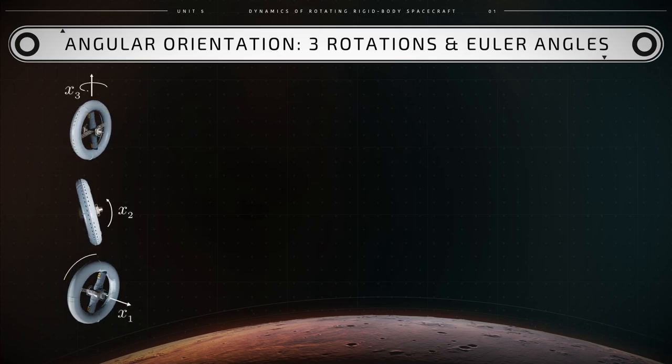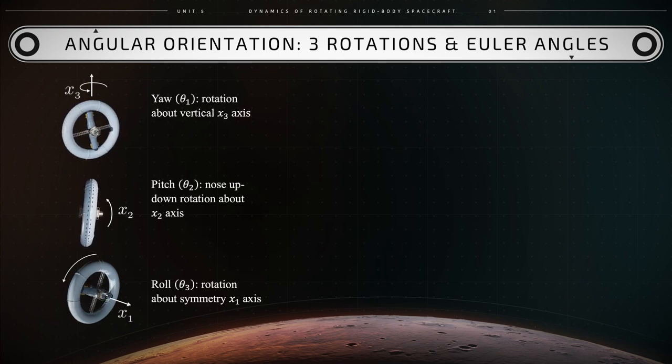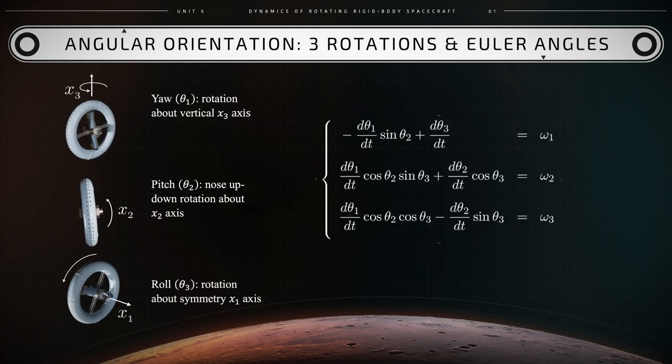The orientation of the spacecraft with a rotating torus is provided by three angles, which are also known as the Euler angles, and they are determined by omega 1, omega 2, and omega 3 as follows. Minus the time rate of change of theta 1 times sine of theta 2 plus the time rate of change of theta 3 equals omega 1. The time rate of change of theta 1 times cosine of theta 2 times sine of theta 3 plus the time rate of change of theta 2 times the cosine of theta 3 equals omega 2.